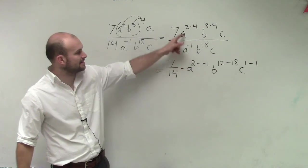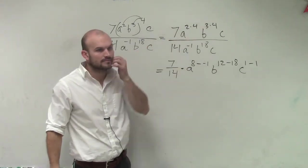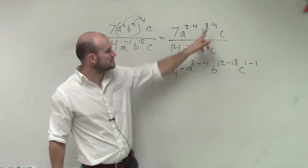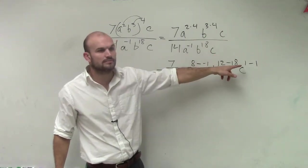Do you see how I just took my a's, and I'm just now subtracting the exponents in the top and the bottom? So this is 12 minus 18. I get you. 1 minus 1, all right?